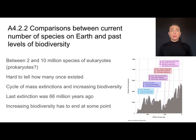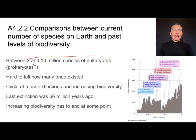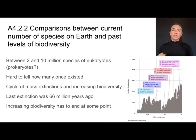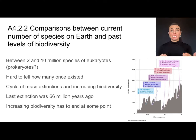Estimating the number of species on Earth is really hard. The current estimate is somewhere between 2 and 10 million species of eukaryotes. That large range reflects the fact that there may be species that exist that we haven't yet identified or recognized as separate species. And in terms of prokaryotes, different species of bacteria —